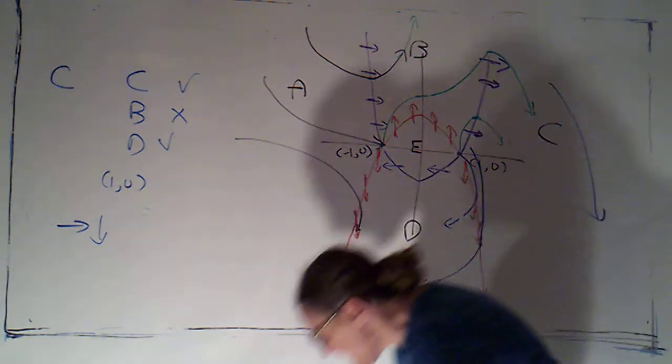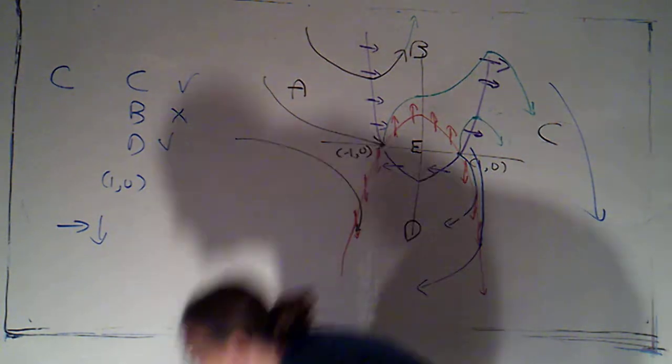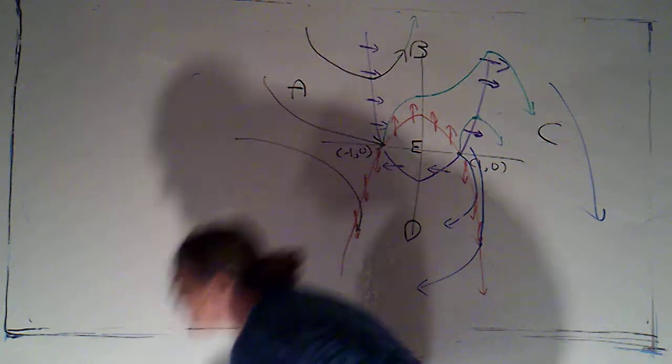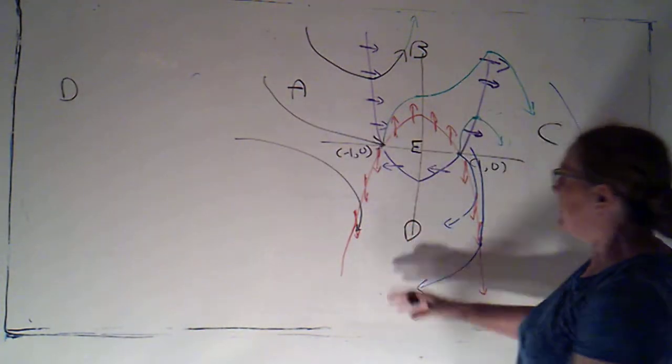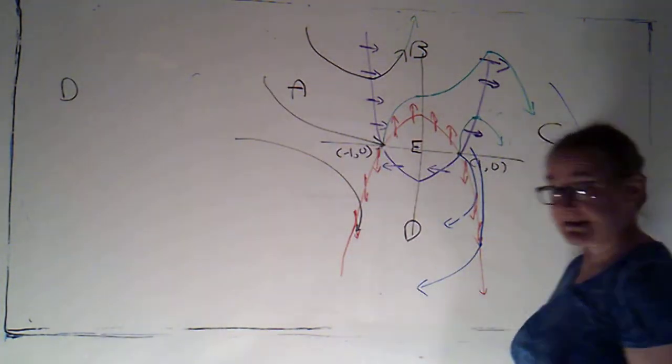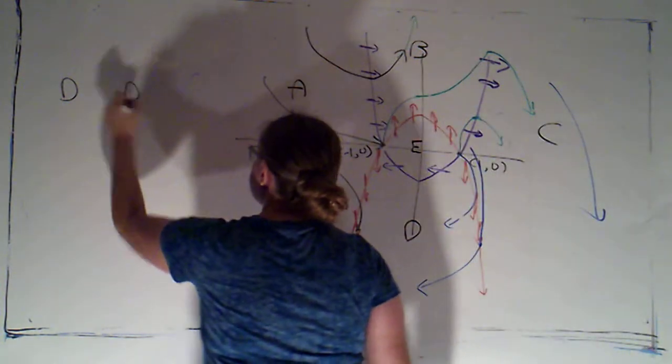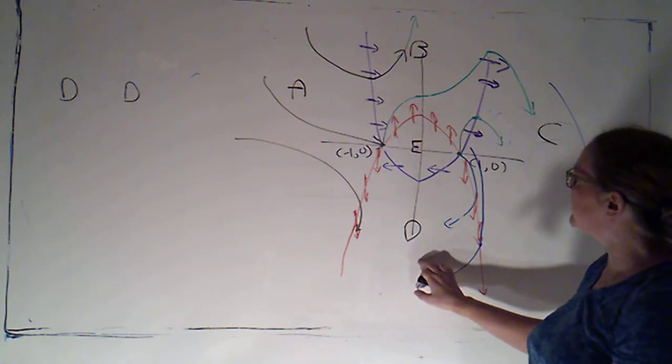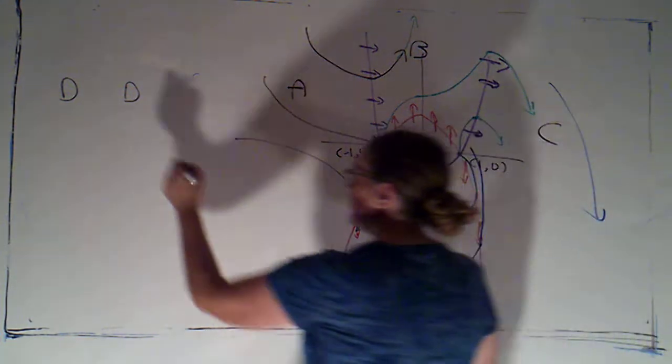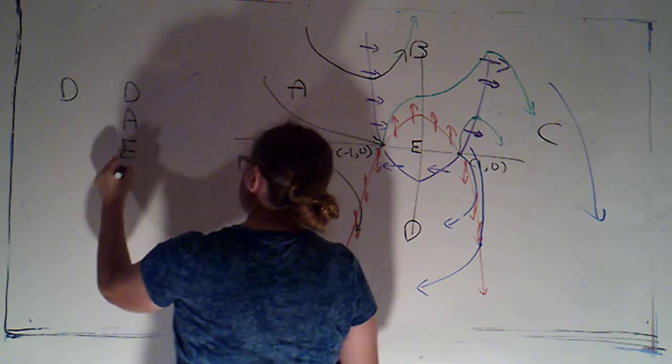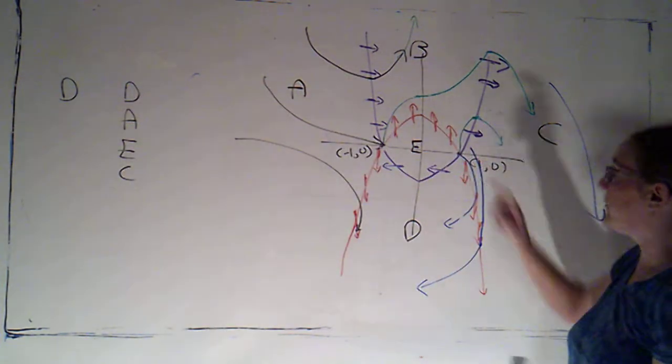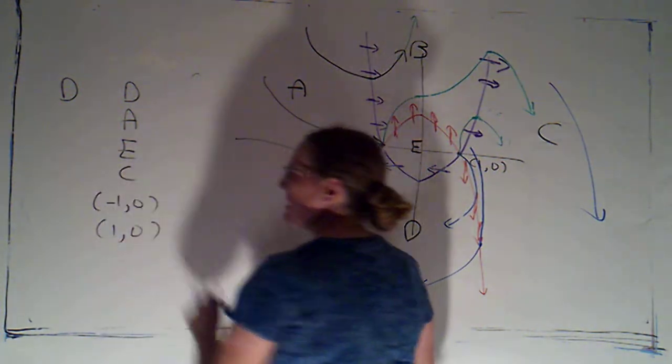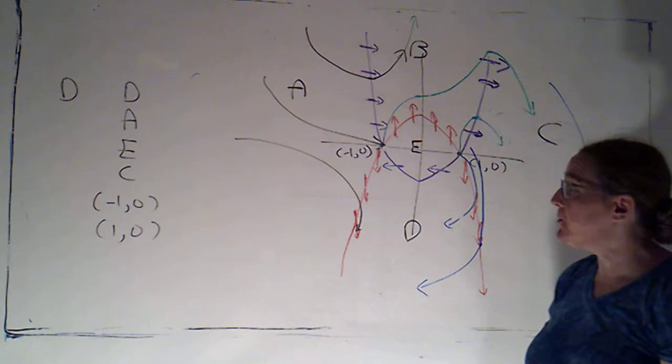Let's take a look at region D. So, D is an unbounded region because it doesn't have a bottom, so I want to see, could I stay in D? Could I pass to an adjacent region? So, my adjacent regions would be A, E, or C, and both equilibrium points are on the boundary of D, so I want to check both of those.